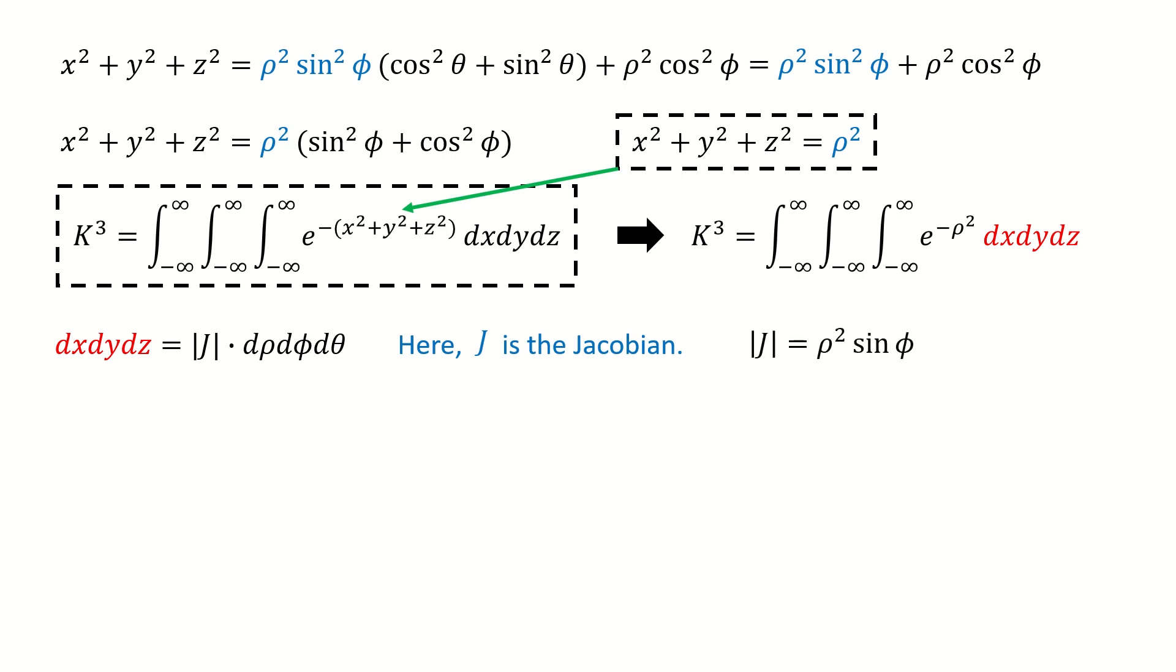Here the J is the Jacobian. For the spherical coordinate, we can find the Jacobian equals to rho squared times sine phi. To make this video compact, I will put the derivation for this Jacobian at the end of this video. Right now, let's accept this result temporarily. Then we plug in to replace the dx dy dz term, so we got here.